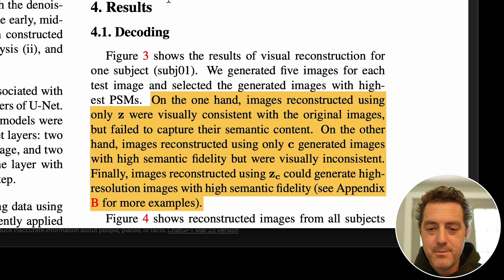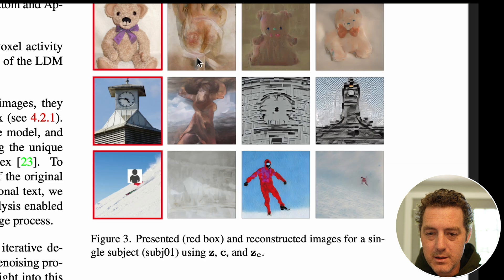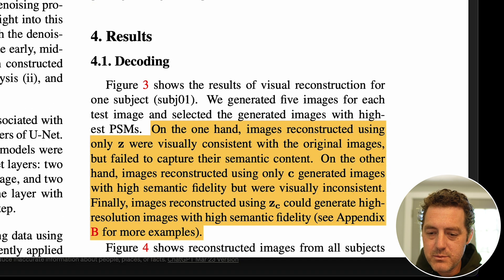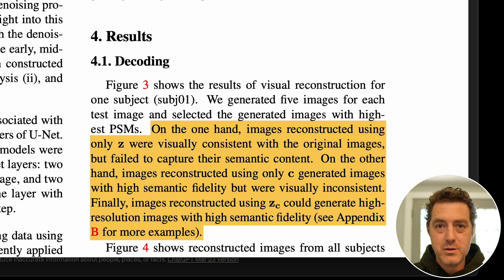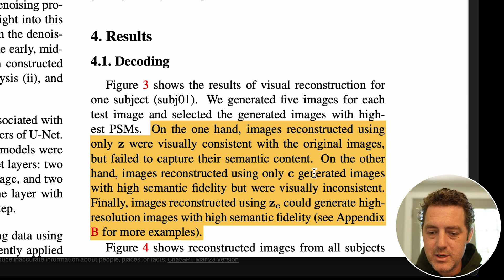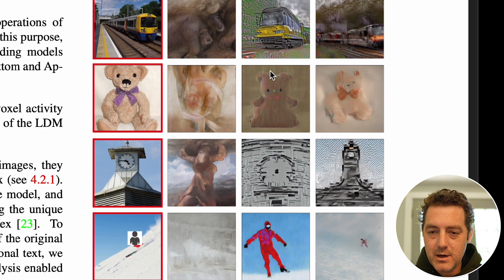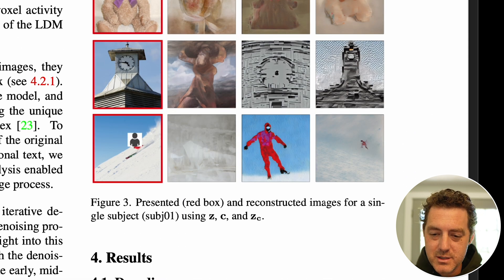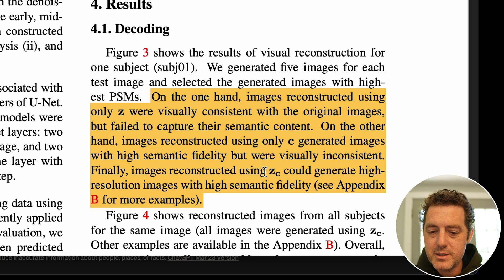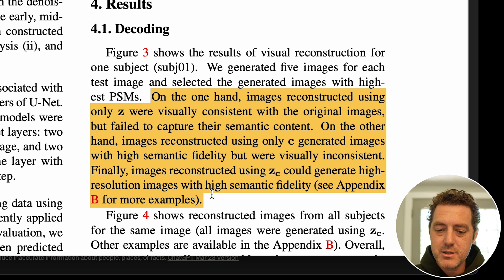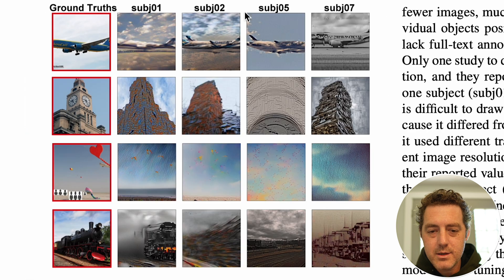Images reconstructed using only Z were visually consistent with the original images but failed to capture their semantic content — meaning what the images actually look like. Images reconstructed using only C generated images with high semantic fidelity but were visually inconsistent with the actual original images. Finally, images reconstructed using ZC could generate high-resolution images with high semantic fidelity.